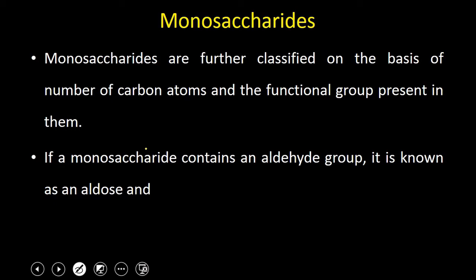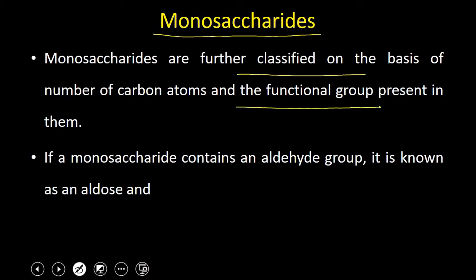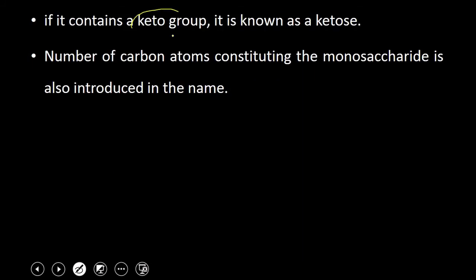Now, monosaccharides are further classified. We have studied the classification of carbohydrates as monosaccharides, oligosaccharides, and polysaccharides. Now we are going to study about monosaccharides in more detail. Monosaccharides are further classified on the basis of the number of carbon atoms and functional groups present in them. If a monosaccharide contains an aldehyde group, it is known as an aldose. And if it contains a keto group, then it is known as a ketose.